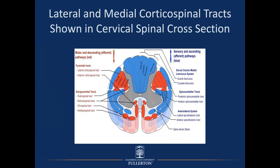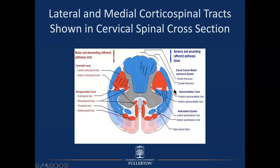This slide shows the location of each of the tracts: the lateral corticospinal and the medial corticospinal. Here is the lateral corticospinal tract — you can see it's somatotopically organized. And here is the medial one, also labeled the anterior corticospinal tract, because it is anterior — it's just off the midline. So it has two names: medial, or anterior corticospinal tract. The lateral, as far as I know, is only called the lateral.